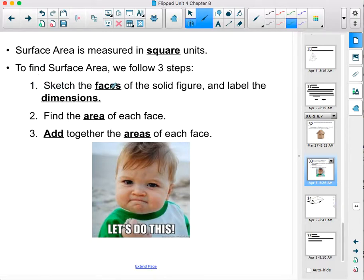To find surface area there are three steps. First we're going to sketch every face of the solid figure and on those faces we're going to label the dimensions or the measurements that go along with that face. Then we find the area of each face and finally we add together all the areas. These problems are very easy, they just take a little bit of work to get finished. So let's see our first example.